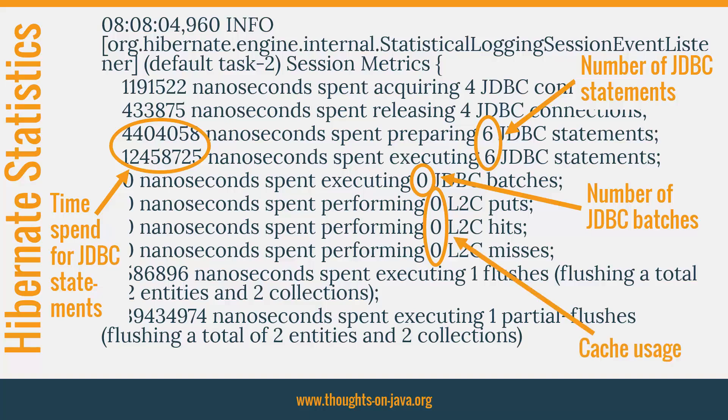The last numbers show the operations on the second-level and the query cache. Put operations are updates on the cache. Hits are elements which Hibernate found in the cache and didn't need to get from the database. Misses are elements which Hibernate didn't find in the cache and had to retrieve from the database. Both caches are deactivated by default and I explain more about them in modules 11 and 12.